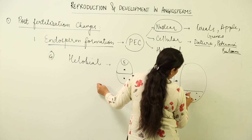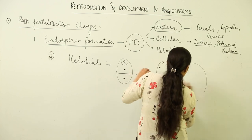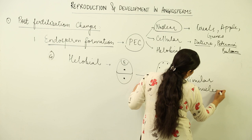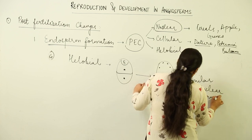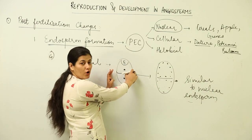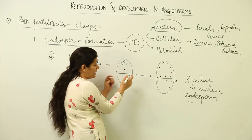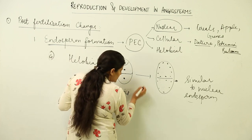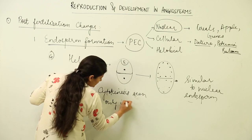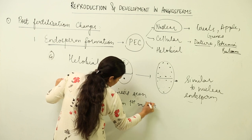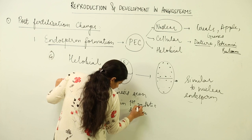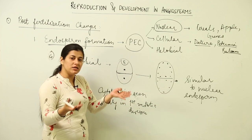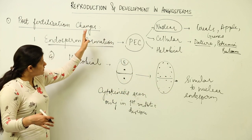In helobial endosperm, after the initial cytokinesis, cell walls may develop later and the rest of the development is similar to nuclear endosperm. To clarify: the primary endosperm nucleus divides into two nuclei followed by cytokinesis — so cytokinesis occurs only in the first division. In subsequent mitotic divisions, cytokinesis is absent. Once the two cells are formed — one chalazal and one micropylar — the nuclear divisions within each cell proceed as in nuclear endosperm.